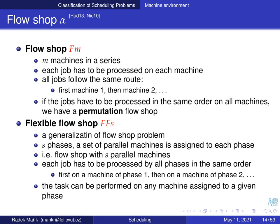A flow shop, labeled F_m, has m machines in series, and each job must be processed on each machine. All jobs follow the same route: first machine 1, then machine 2, and so on. In many cases we call these a permutation flow shop when jobs are processed in the same order on all machines.